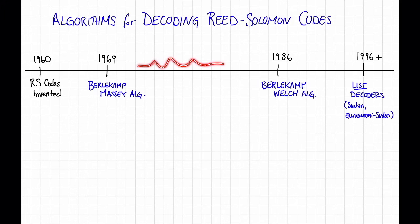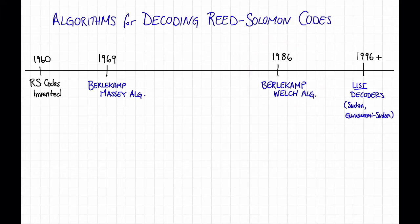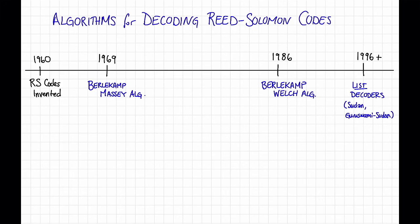Then in 1986, Berlekamp and Welch developed a new algorithm of a very different flavor than the Berlekamp-Massey algorithm — in particular, it uses the original view where the message is the coefficients of the polynomial. Later, in the 90s, people started thinking about how to decode Reed-Solomon codes beyond half of the distance. This is called list decoding, and we're going to return to it in a later video, where we'll see some of these decoders.